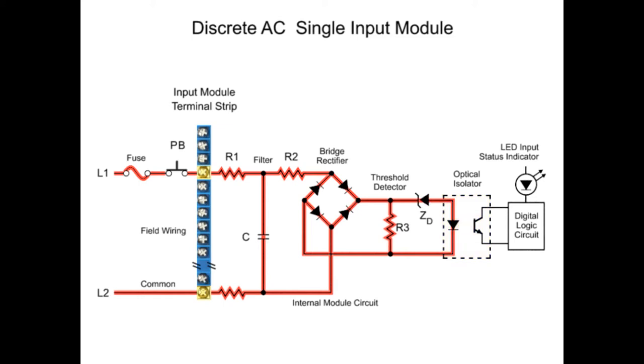When light is received at the phototransistor, the push button ON state is communicated to the processor and the status indicator is illuminated.